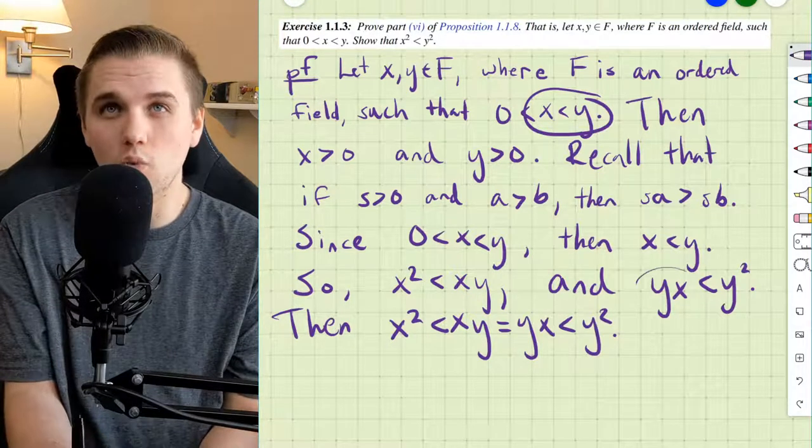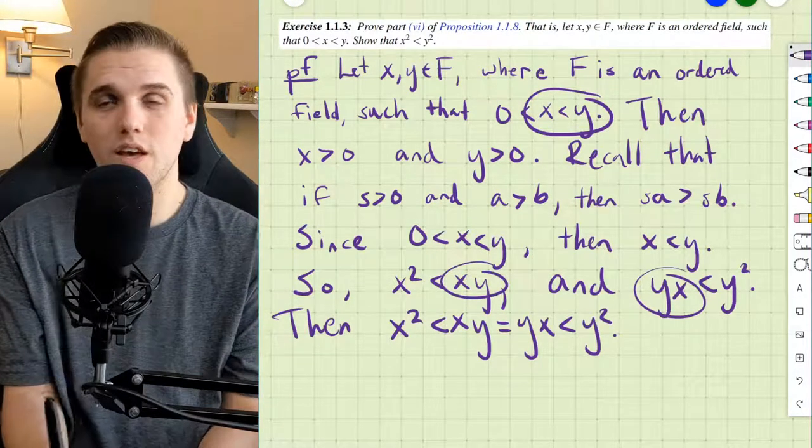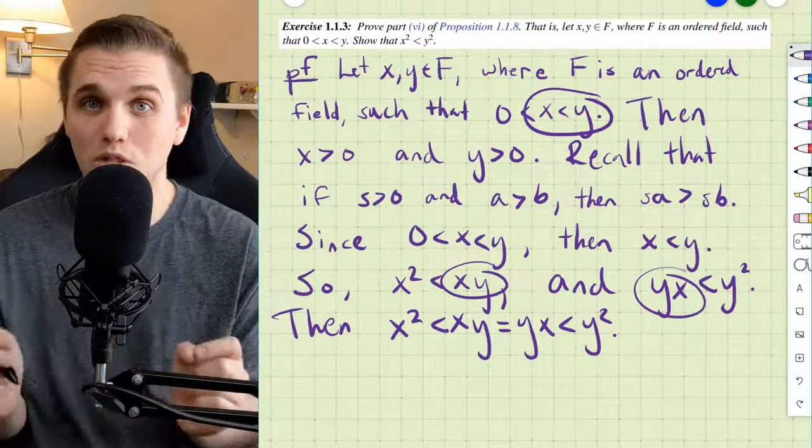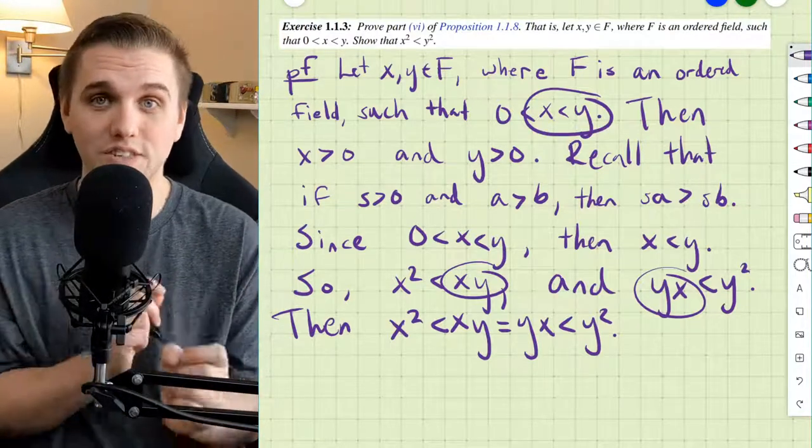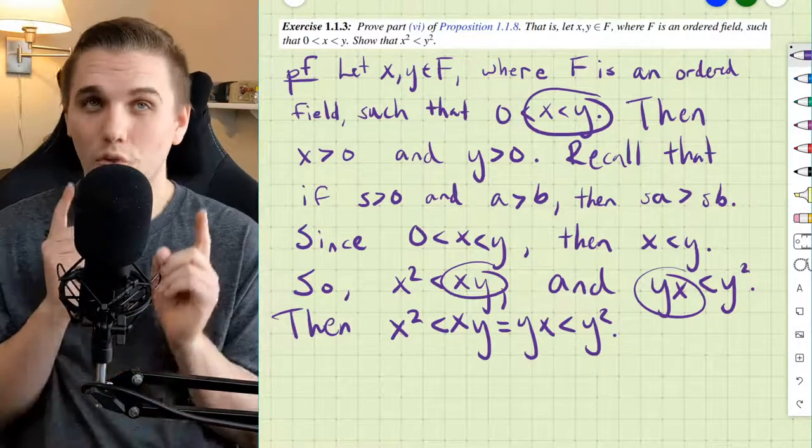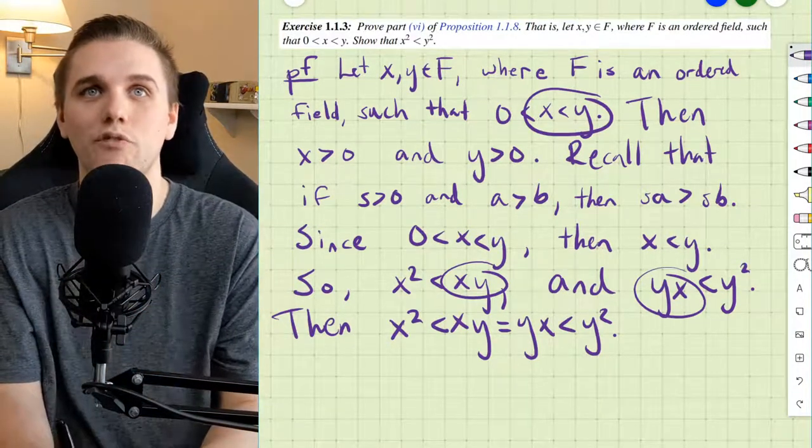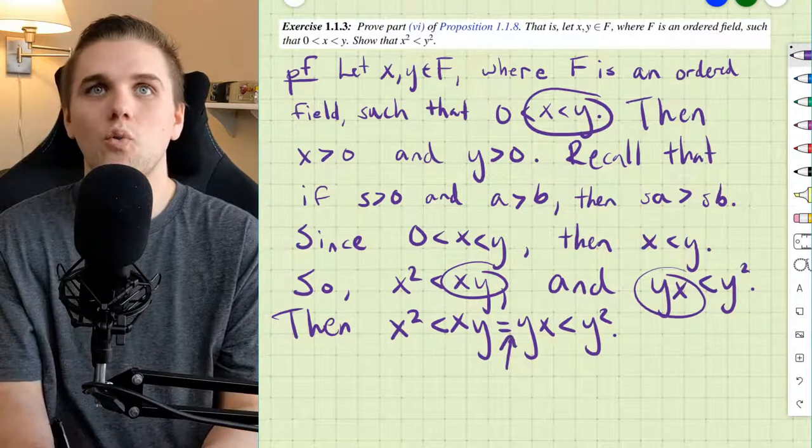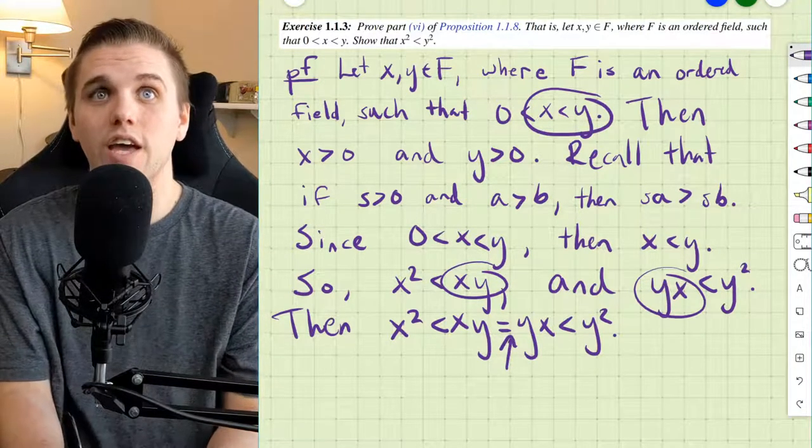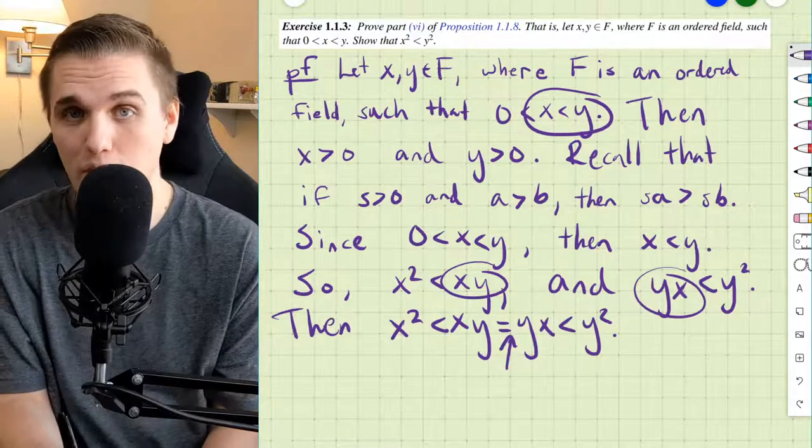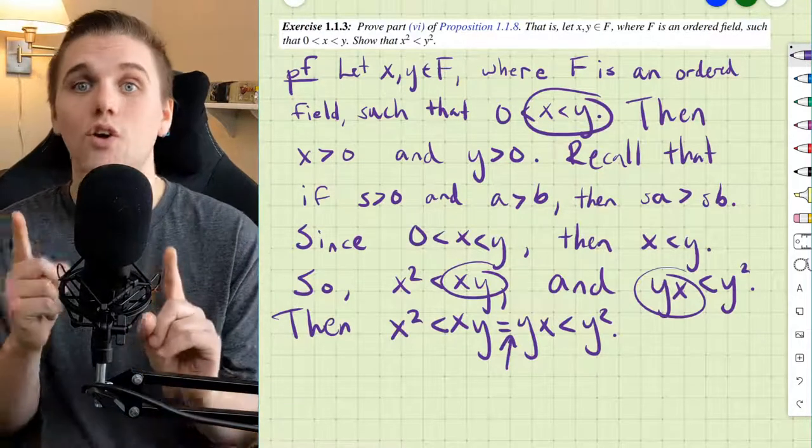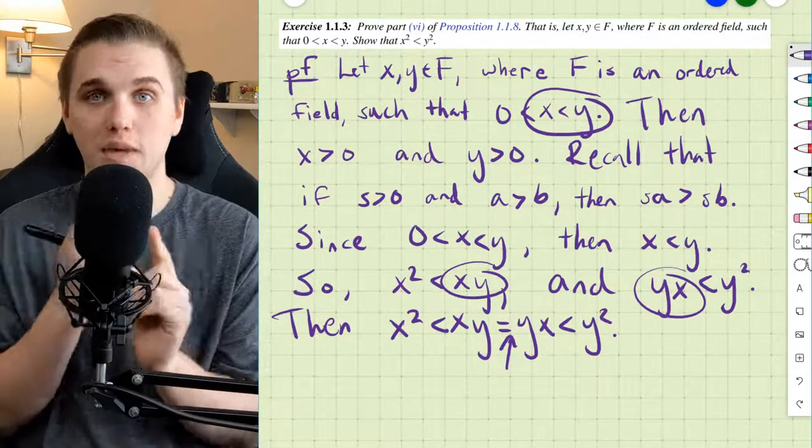And so, the reason why I kept everything organized according to how I multiplied both sides of the inequality on the left side, the reason I did that is because I really want to emphasize that in an ordered field, the reason we get to make this equality here is because of the commutative property of multiplication. You can reorder your multiplication.